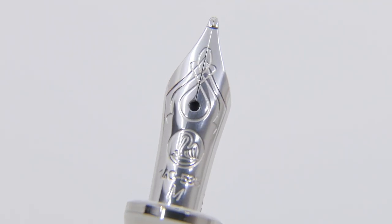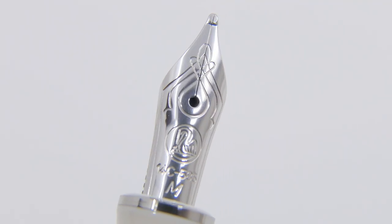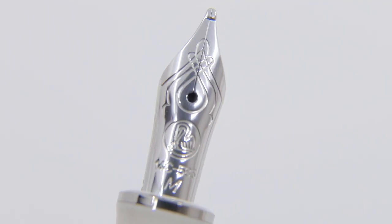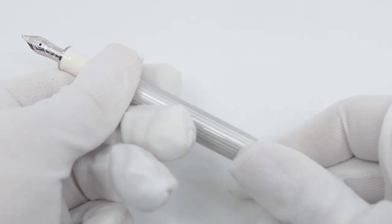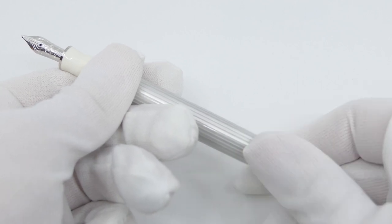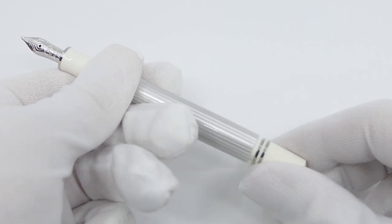The German-made nib is available in extra fine, fine, medium and broad. The fountain pen uses the iconic Pelican piston filler mechanism with an ink capacity of about 1.3 milliliters.